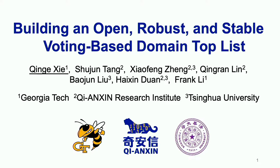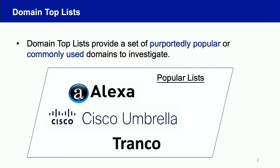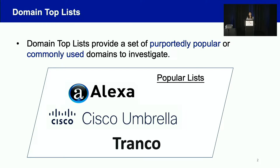Many of you here might have used a domain top list before in your study. For those who have not, a domain top list basically provides a set of commonly used domains to investigate. Popular examples include Alexa Top 1 Million, Cisco 1 Million, and Tranco. There are actually not so many free lists available these days, and unfortunately Alexa, the one most of us were working with, has been recently retired, leaving even fewer lists we can use.